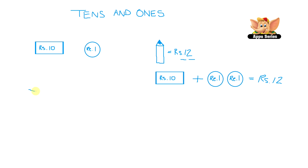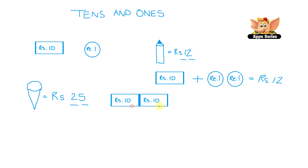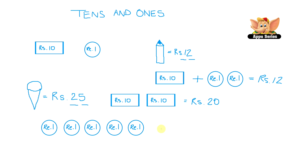Let's do another one. How about going to the ice cream store and buying a yummy ice cream for rupees 25? How many notes and coins would you pay? 25 has two 10s and five 1s. So we pay two 10 rupee notes, which equals rupees 20. How much more do we have to pay for the ice cream? That's right, five more rupees. That can be paid by five 1 rupee coins, which equals rupees 5. So that's 20 plus 5 equals rupees 25 — that's how much you pay the shopkeeper for your ice cream.